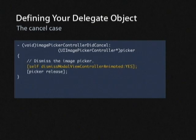The cancel case is even easier — all you need to do is dismiss the controller. The user didn't select something, so it's as if nothing happened, and you can get rid of the picker by releasing it.